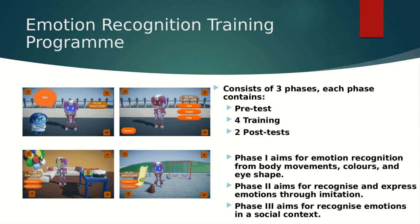In the training session, the child watches the robot express the six emotions, one at a time in a randomized order, while explaining the name of the emotion and when we feel it. Each emotion has been associated with a cartoon character to grab the child's attention and to help the learning process. Immediately after completing the four training sessions, the child will take the post-test, which is identical to the pre-test, and two weeks after the training, the child will take the follow-up post-test. The scores obtained in the pre-test and post-test will be compared to see the improvement.